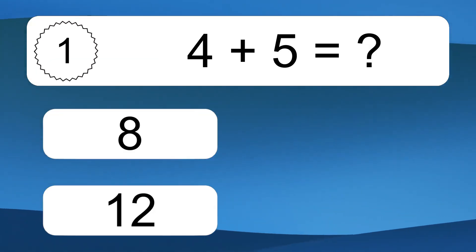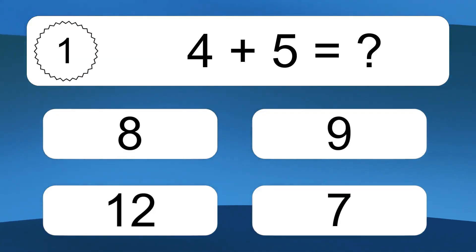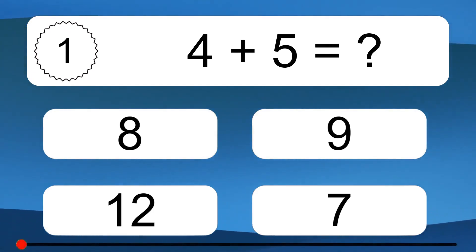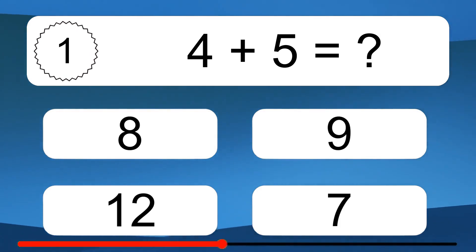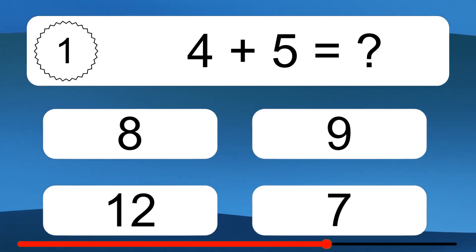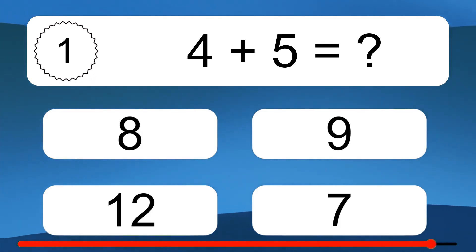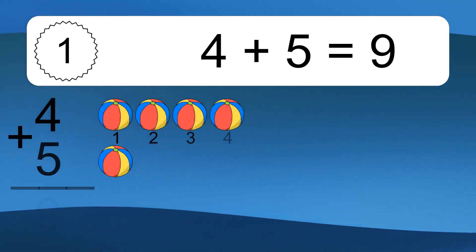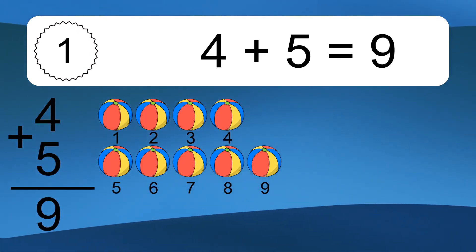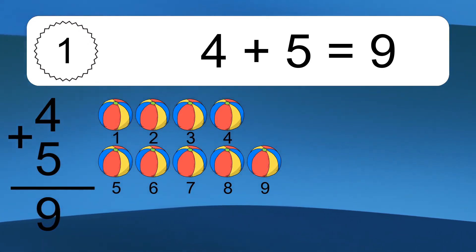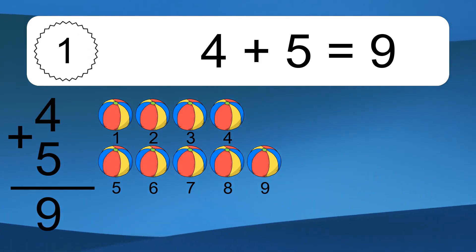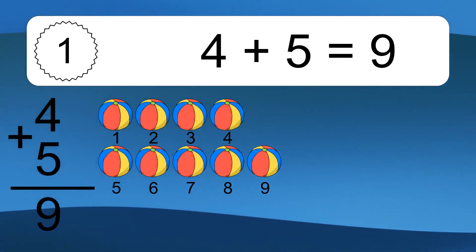4 plus 5 equals what? 1, 2, 3, 4, 5, 6, 7, 8, 9.